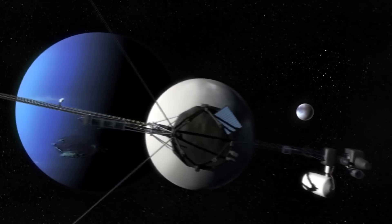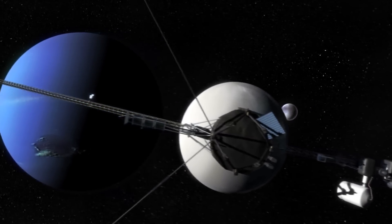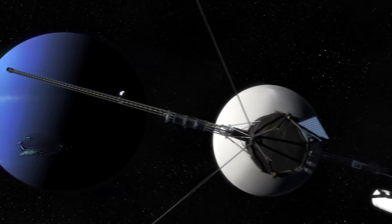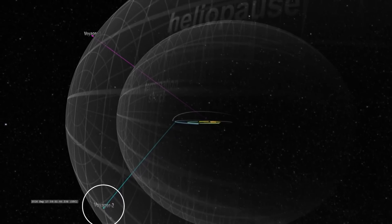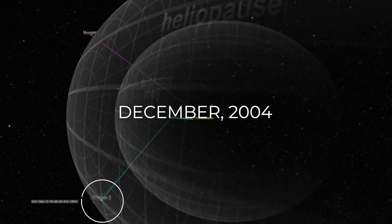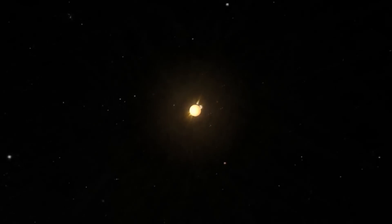However, answering that question would be left to future probes, as Voyager 2 left the blue icy planet, making its way to the opposite edge of our solar system by December of 2004.